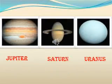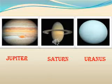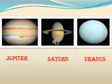Look at the pictures of Jupiter, Saturn, and Uranus. These planets have rings around them. These are belts of small debris. These rings may be seen from the Earth with the help of powerful telescopes.